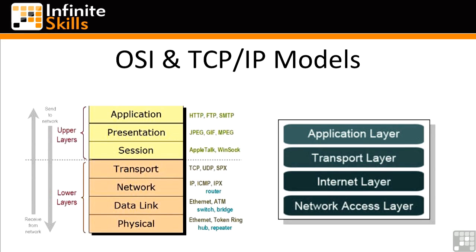Above that is the session layer. That's layer 5, and that's AppleTalk and SSH, as well as several other protocols. At the presentation layer, which is layer 6, you'll often see people refer to something like JPEG or MPEG as examples of protocols that live at that layer. And finally, we have layer 7, which is the application layer — that's HTTP, FTP, SMTP, and similar application protocols whose responsibility is to deliver end-user functionality.